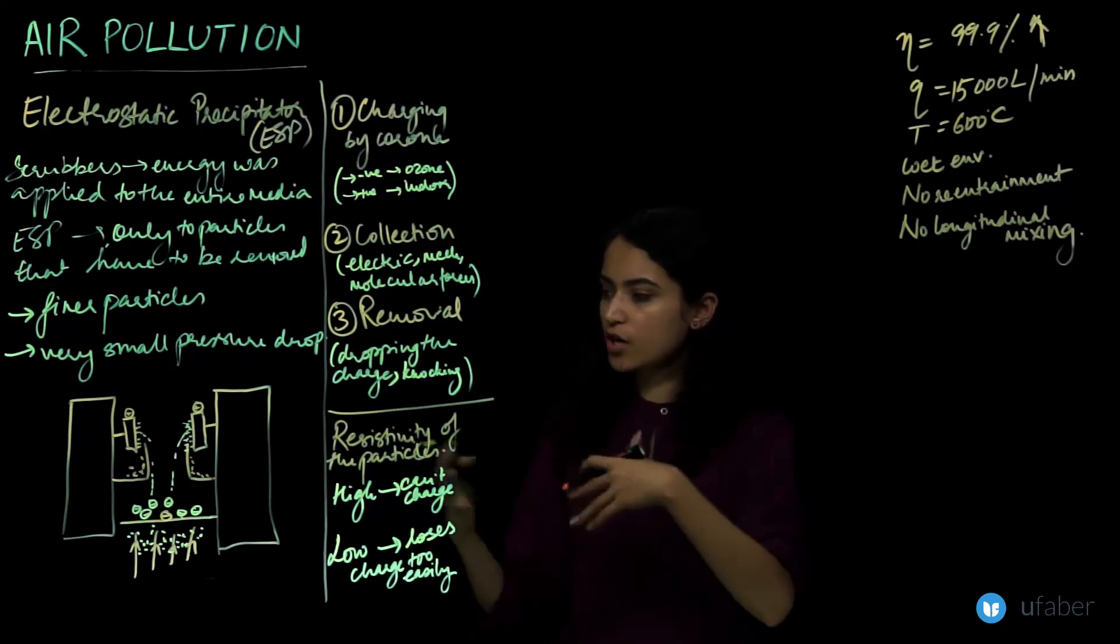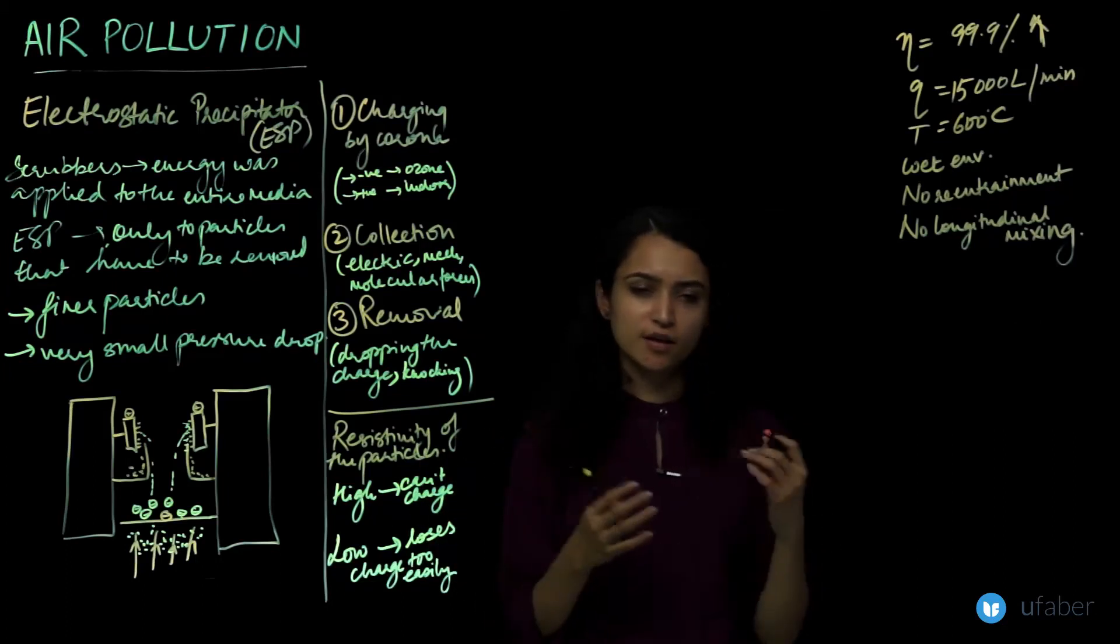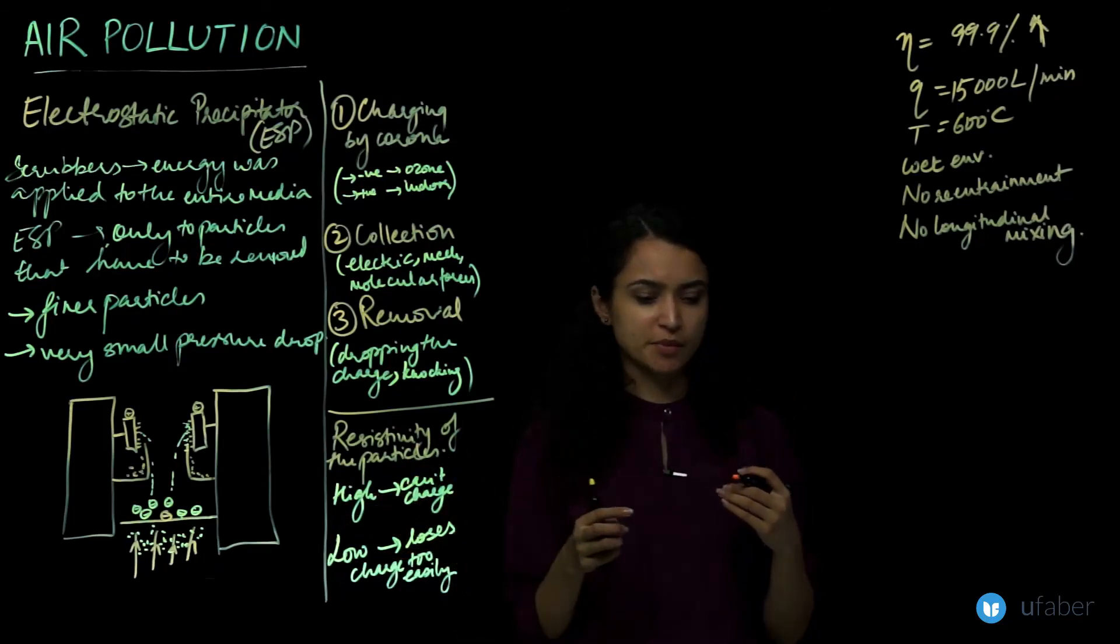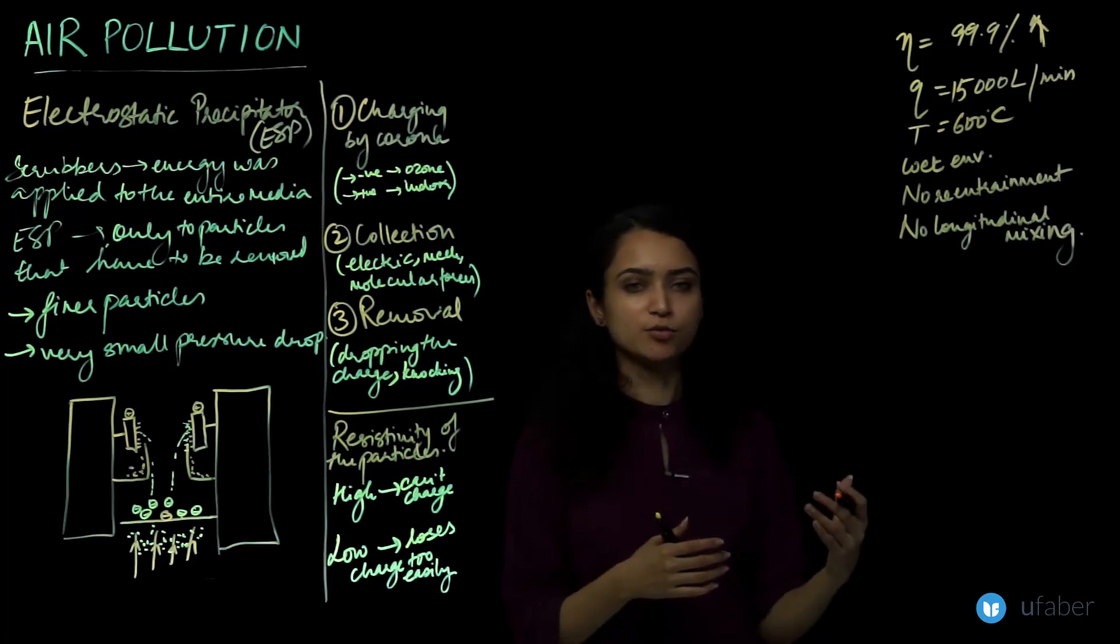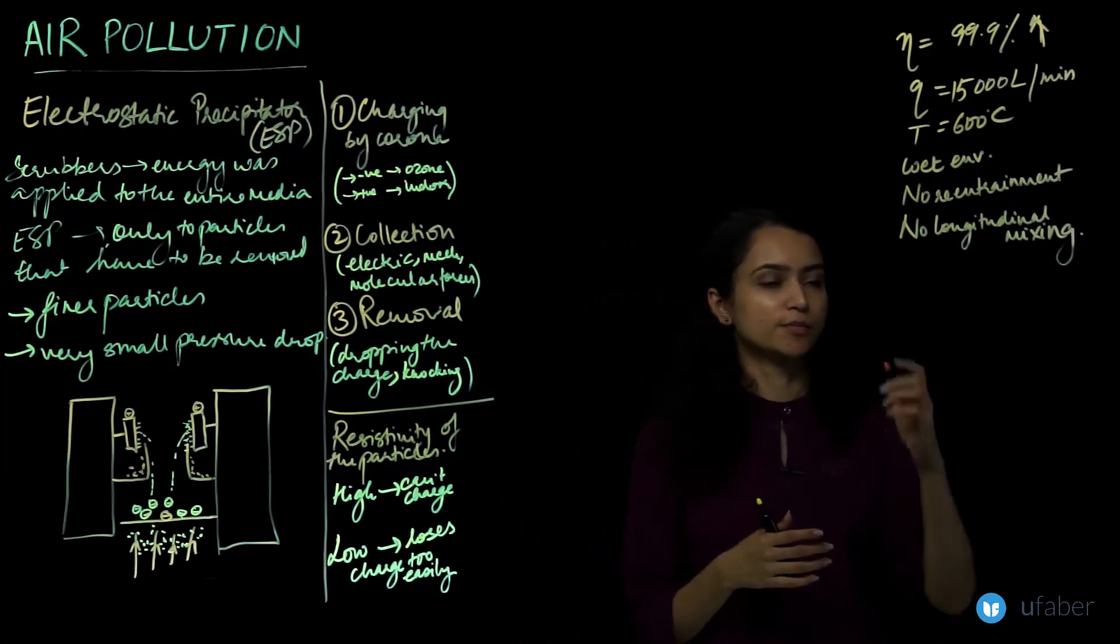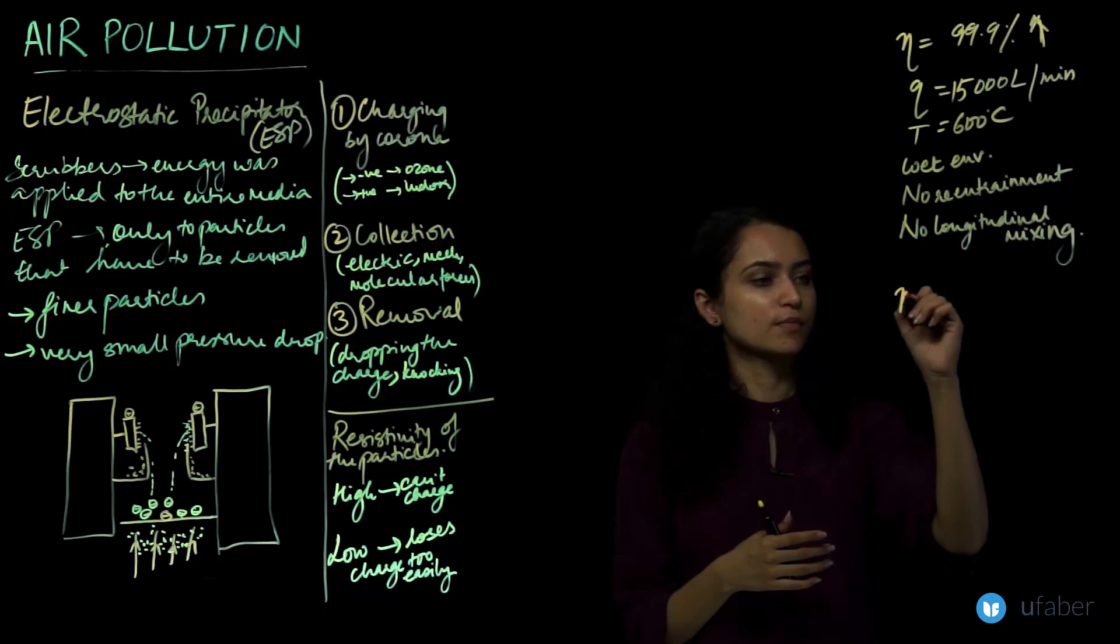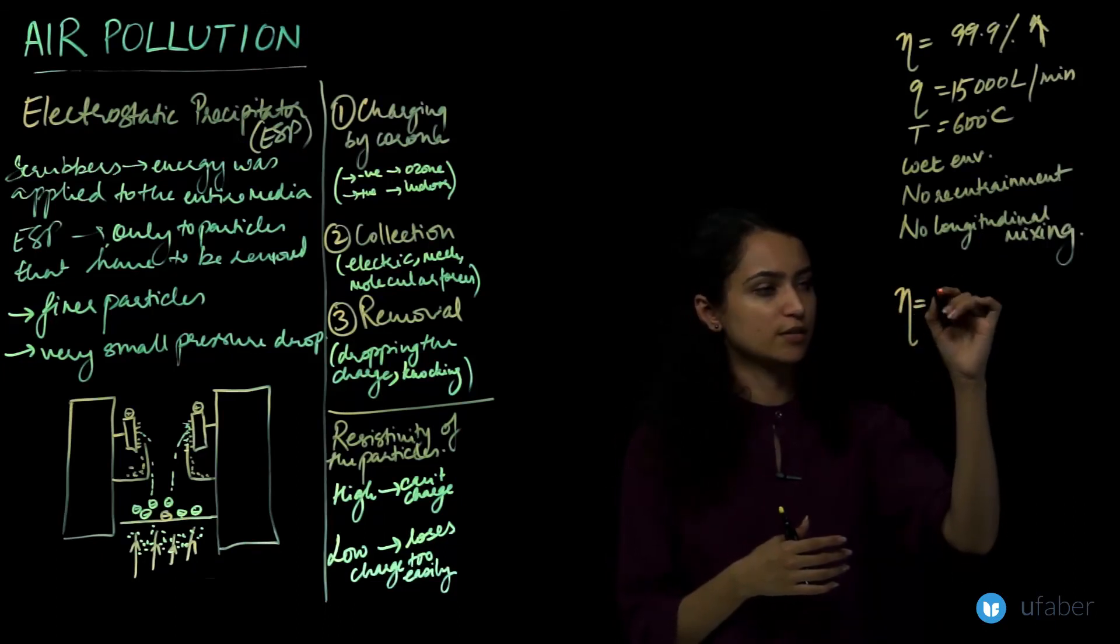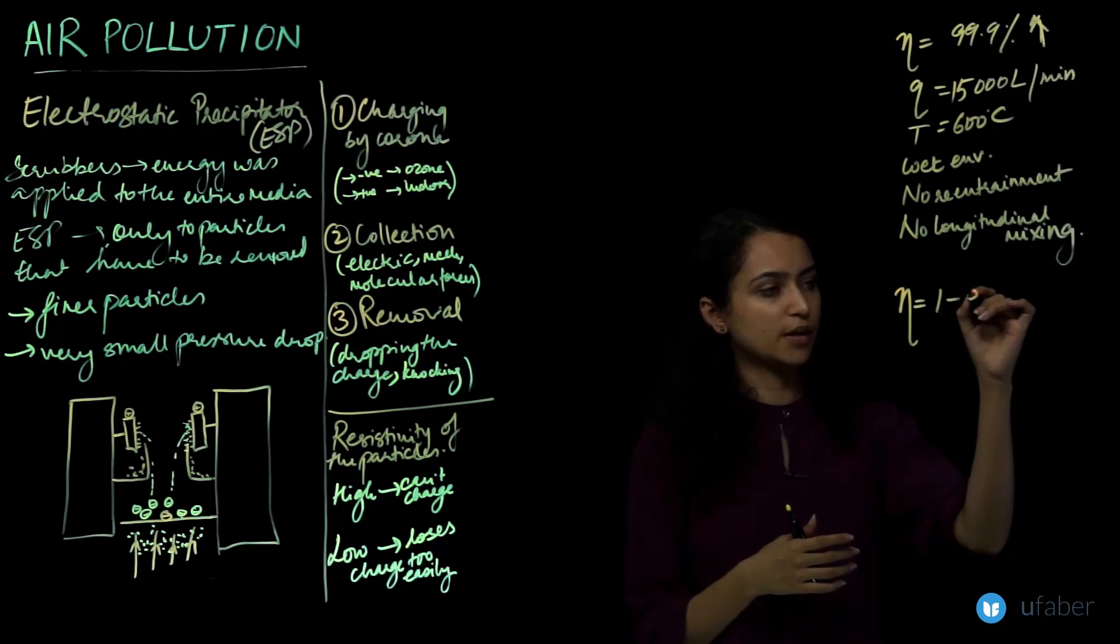An equation which gives us the efficiency of an electrostatic precipitator - I am just going to introduce that, I am not going to get into how it is derived. The efficiency of an electrostatic precipitator is 1 - e^(-wA/Q).